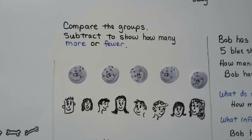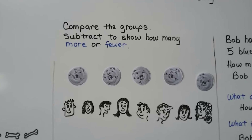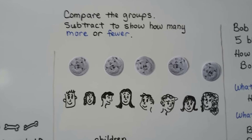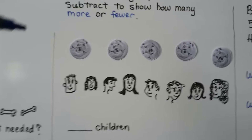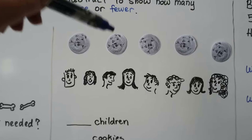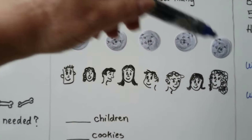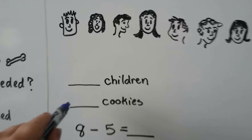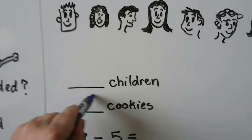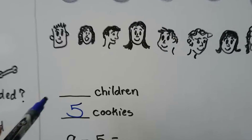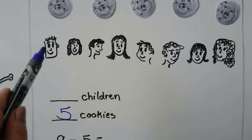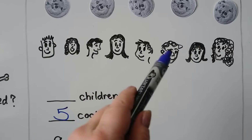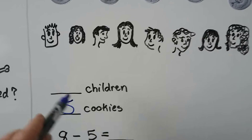We can compare the groups and subtract to show how many more or fewer. We have one, two, three, four, five cookies. We have one, two, three, four, five, six, seven, eight children.